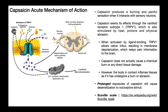So we consume something that has capsaicin — how does it work? Capsaicin has two types of mechanisms: acute mechanisms and chronic mechanisms, which require prolonged exposure. Capsaicin produces a burning and painful sensation when it interacts with sensory neurons. Here you see the plasma membrane of a neuron with the TRPV1 ion channel. Protons can bind and trigger this channel to open. Endogenous agonists can go through the membrane and bind to a cytoplasmic region of the protein, and capsaicin does the same thing — it binds to this receptor on the ion channel and causes it to open.